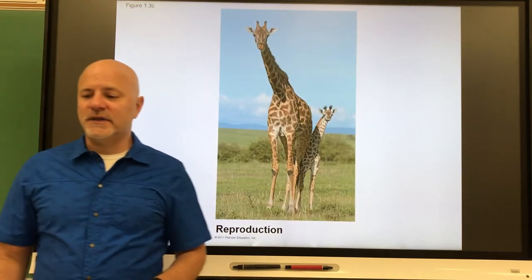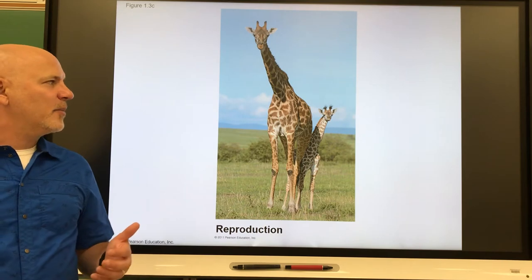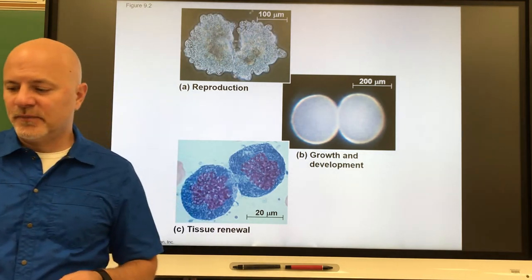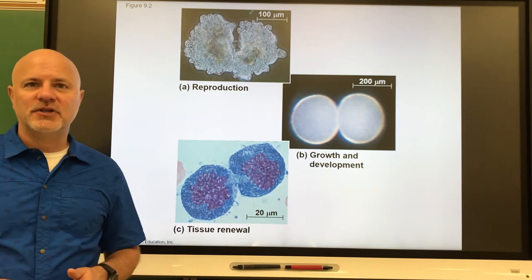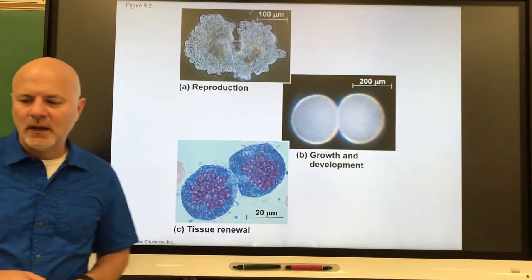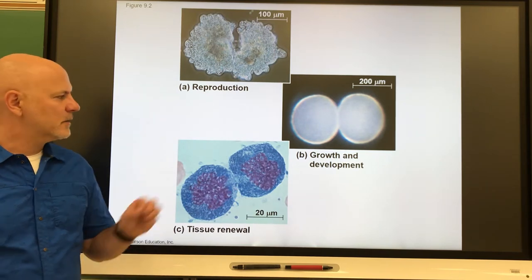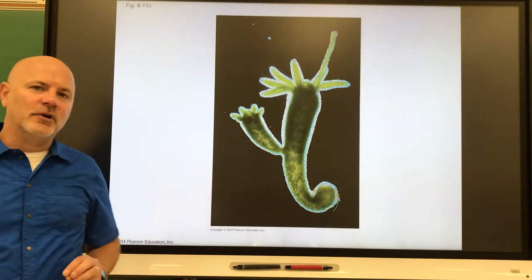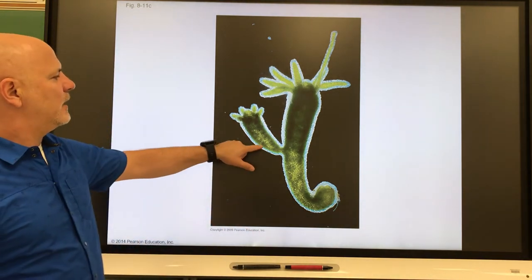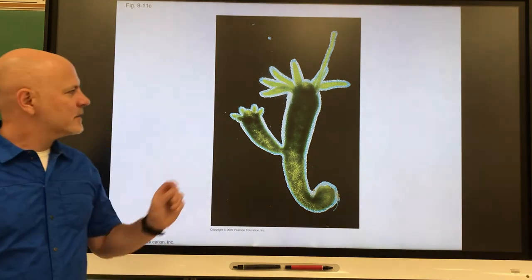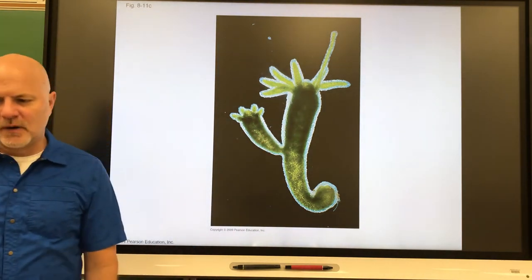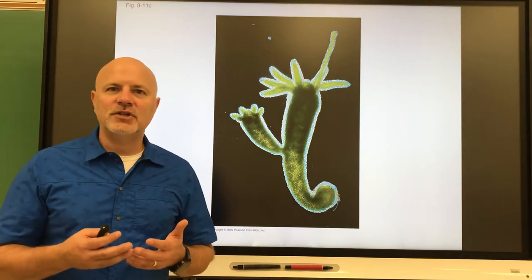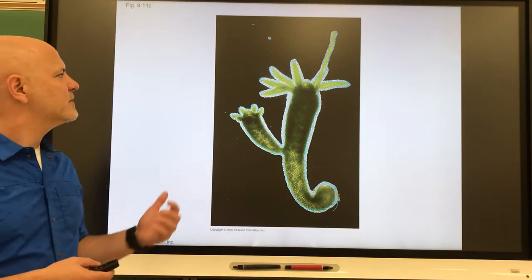All life reproduces, either sexually or asexually. Asexual reproduction is the creation of offspring by a single parent without the participation of gametes — egg and sperm cells. The offspring are genetically identical to the parent. This is shown here with a cell dividing into two cells, and with a hydra undergoing budding — the same genetic material in both. Asexual reproduction is beneficial in a constant, non-changing environment, and also because you don't need to find a mate.